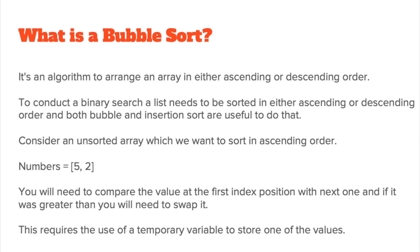So what exactly is bubble sort? Bubble sort is an algorithm that arranges an array or a data set in either ascending or descending order. To conduct a binary search you need to sort a list or array in ascending or descending order first, and both bubble and insertion sort are useful for that. Consider you have an unsorted array called numbers with two values — five and two — which you want to sort in ascending order. You need to compare the value at the first index position with the next one, and if it is greater then swap it.